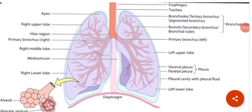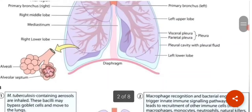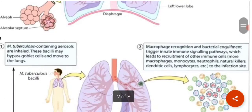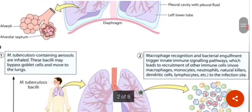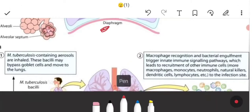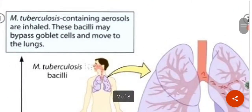This is the diagram of the lungs. Mycobacterium tuberculosis particularly affects the alveoli region in the lungs — the site of infection is the pulmonary alveoli. Looking at the pathogenesis: the bacteria are rod-shaped (bacilli). First, Mycobacterium tuberculosis-containing aerosols are inhaled, and these bacilli may bypass the goblet cells and move to the lungs.